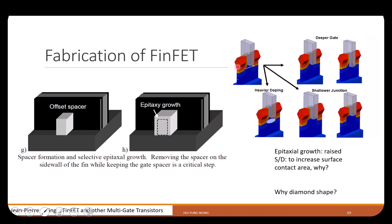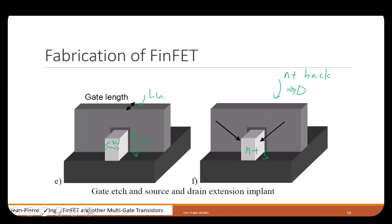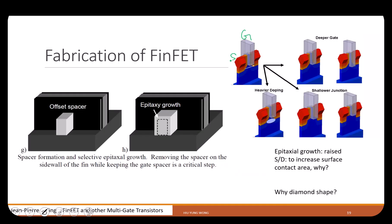After implantation, we do spacer offsets to avoid the gate touching the source and drain. Then we do epitaxial growth. The fin originally has just a rectangular shape after etching, but we grow silicon or silicon-germanium on it in a chamber — gradually depositing atoms until it becomes larger. As a result, the source and drain become very thick. We want this to reduce contact resistance, because later we deposit metal on top to contact other places.